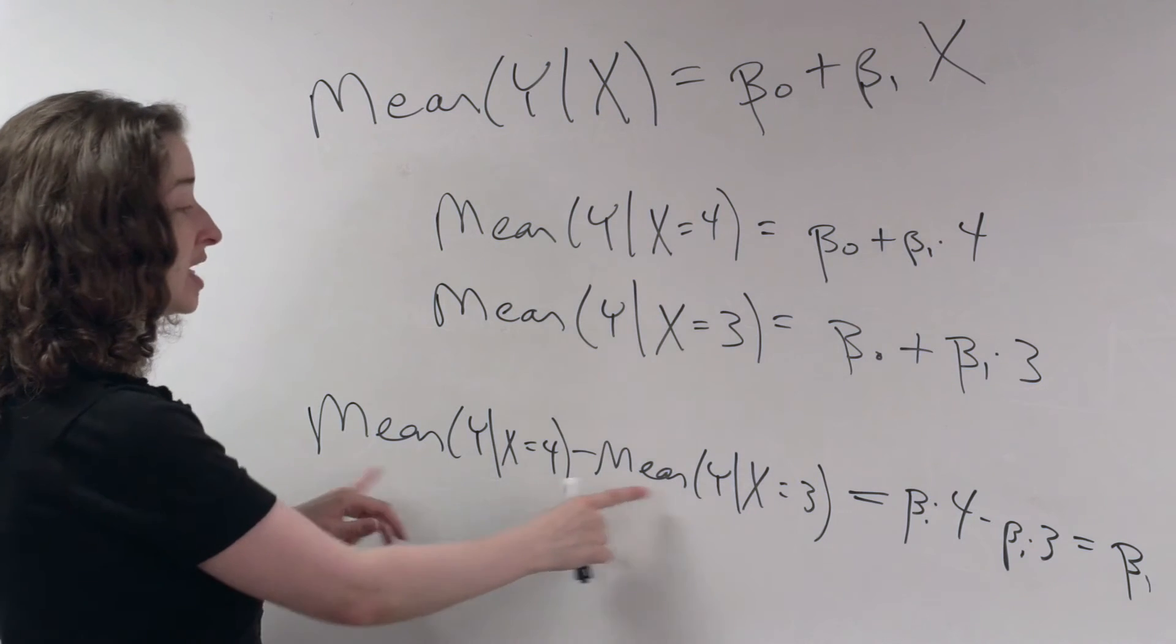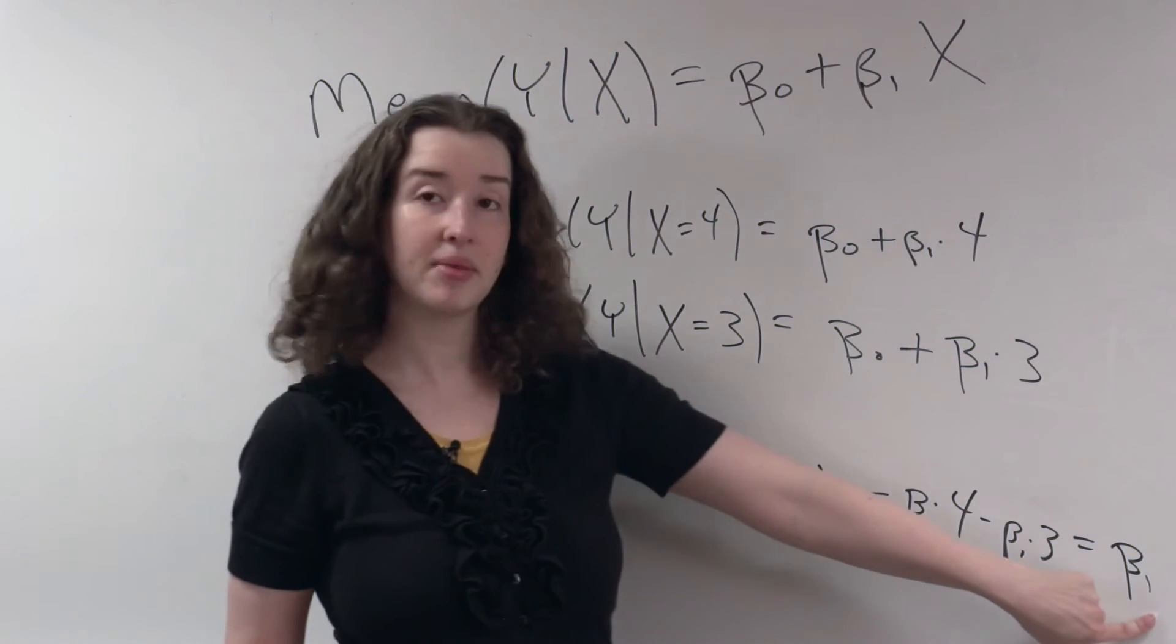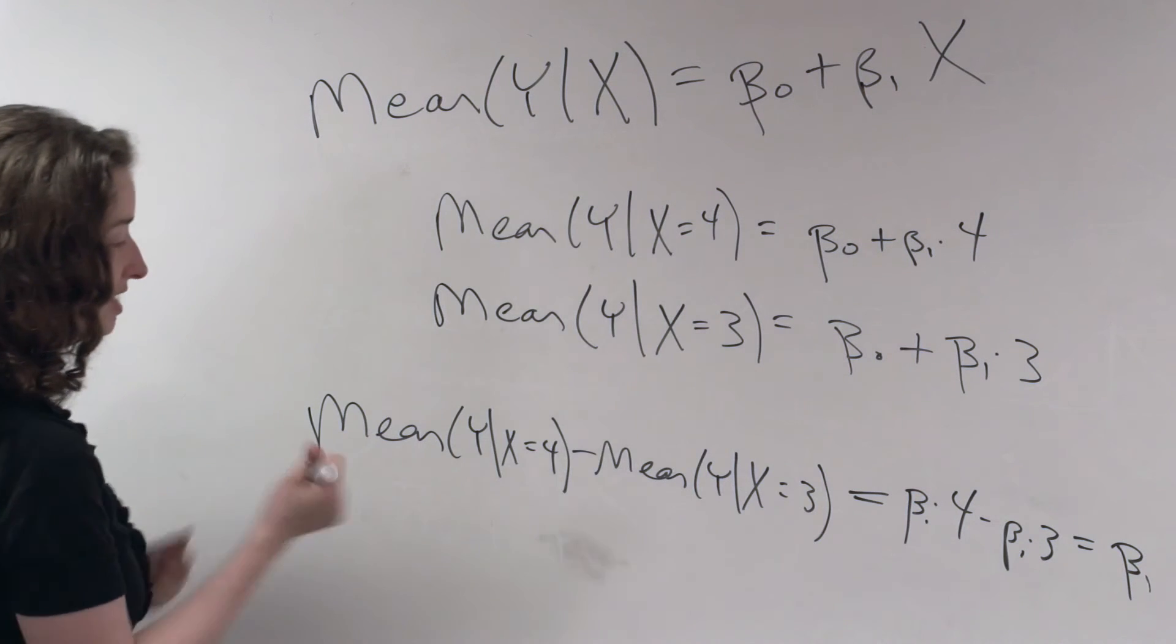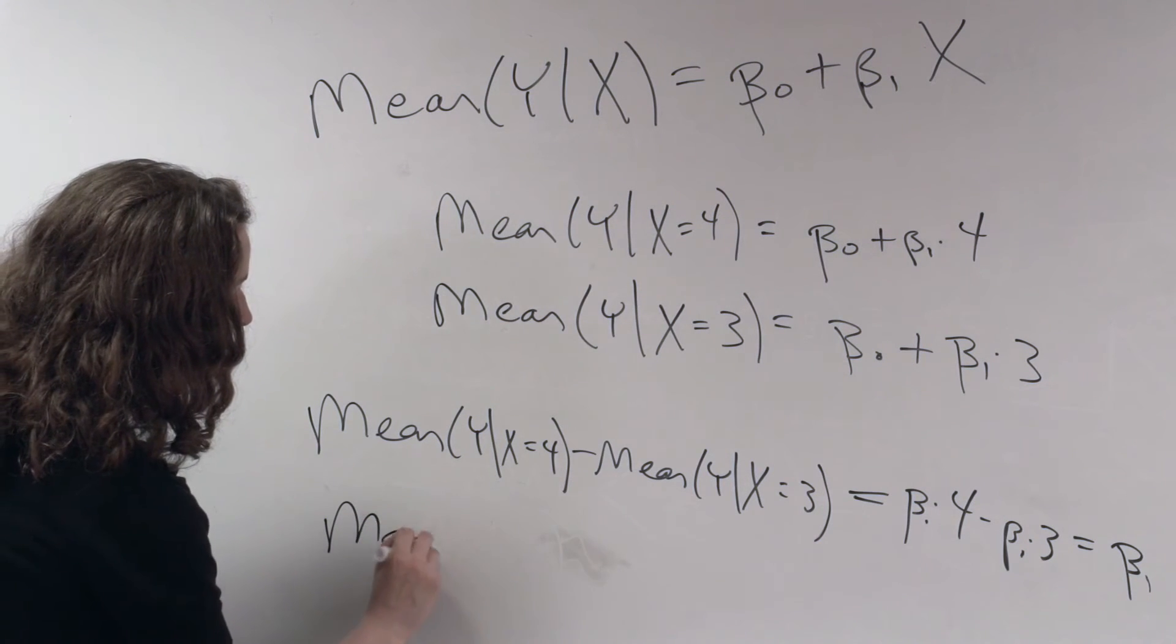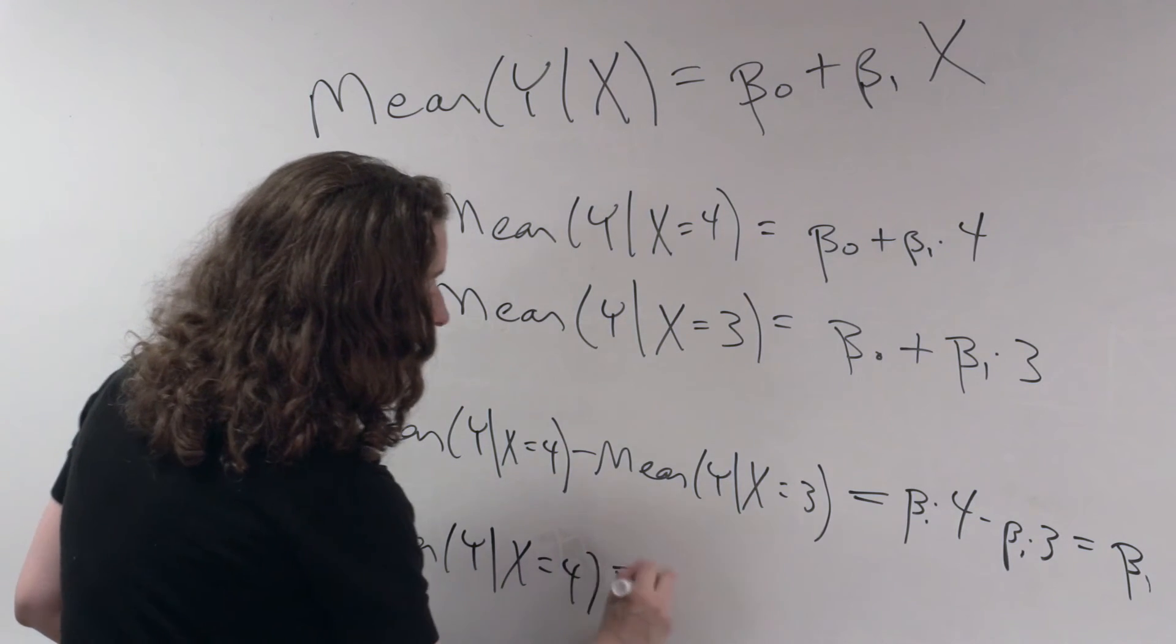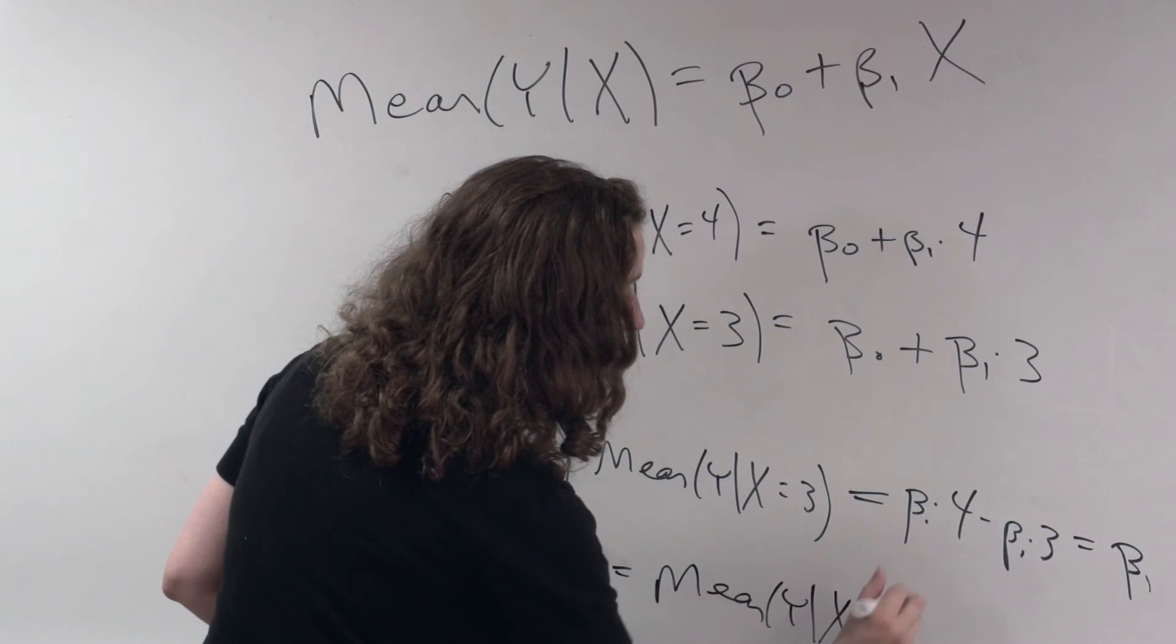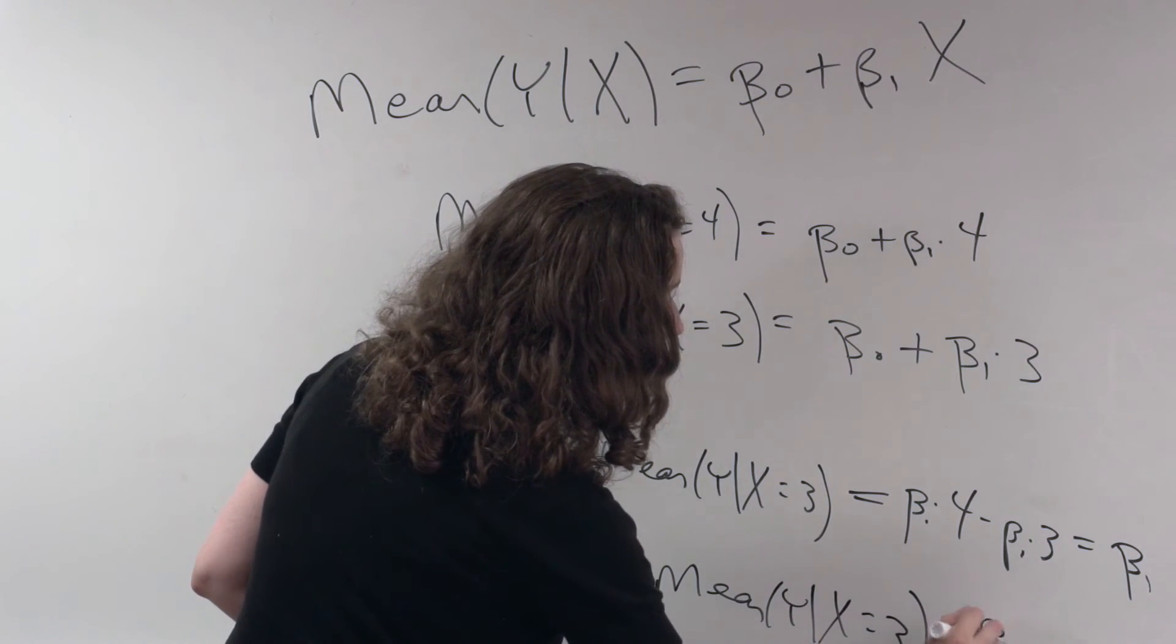when X goes up by 1, the mean of Y given X increases by beta 1. One way to rewrite this statement is to say the mean of Y given X is equal to 4, I'm going to add this to both sides, is equal to the mean of Y given X is equal to 3 plus beta 1.